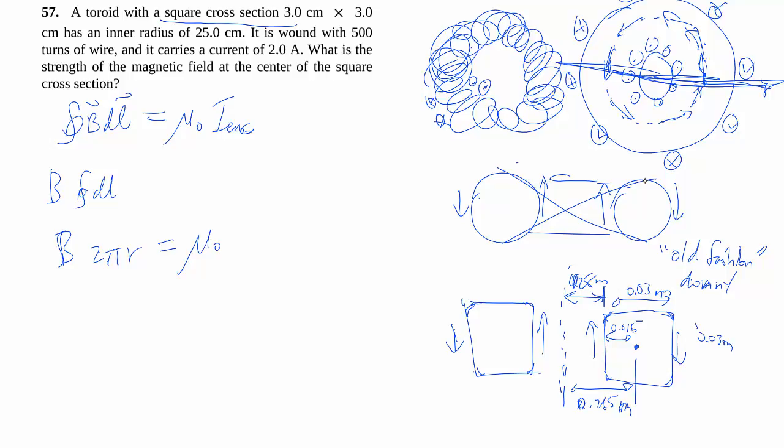In terms of current enclosed, well, we're enclosing every one of these current that goes out of the page and not including all the stuff that are outside of that, that's into the page. But there's many, many wires. They say there's 500 turns and you're grabbing all 500 of it. So it's going to be your total n multiplied by the current of each wire.